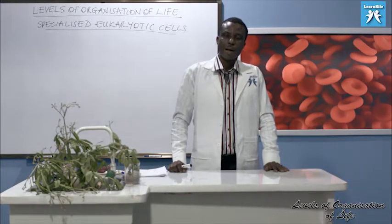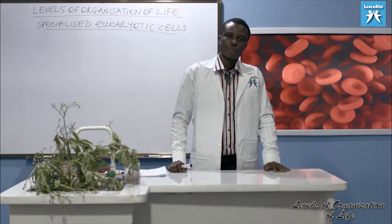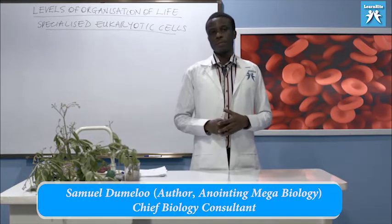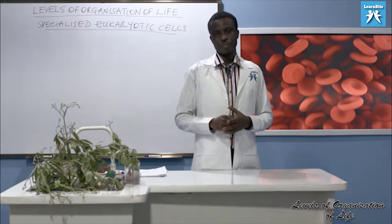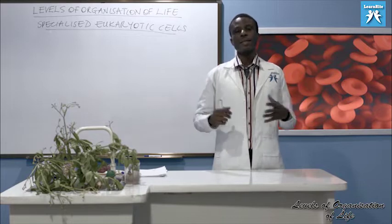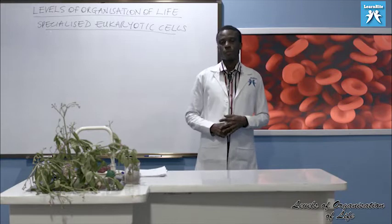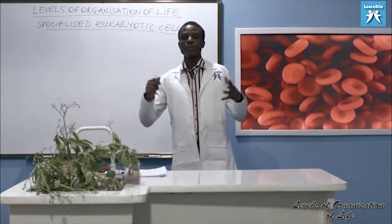Hello, welcome back. We are still on levels of organization of life — specialized eukaryotic cells — and we're attempting to look at levels of organization of life. In the previous video, we explained what specialized cells are and listed some examples in animals and in plants. In this lesson, we want to look at some specific eukaryotic cells.